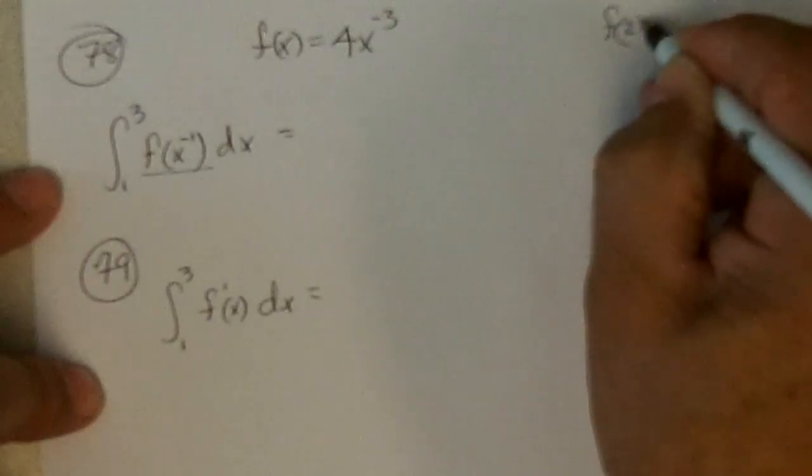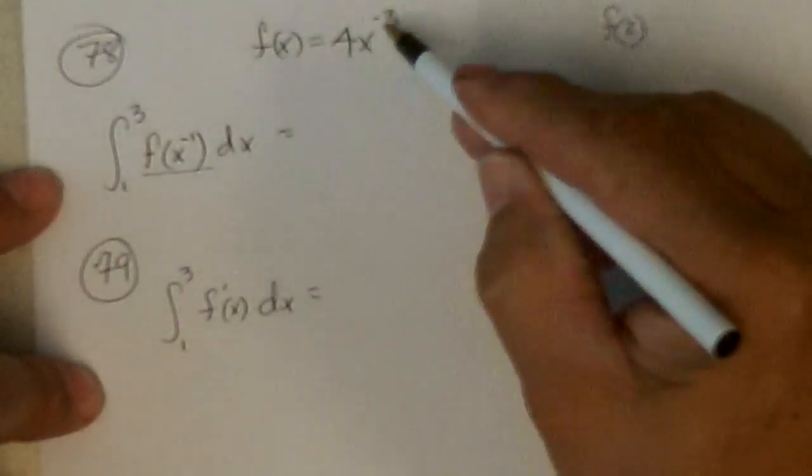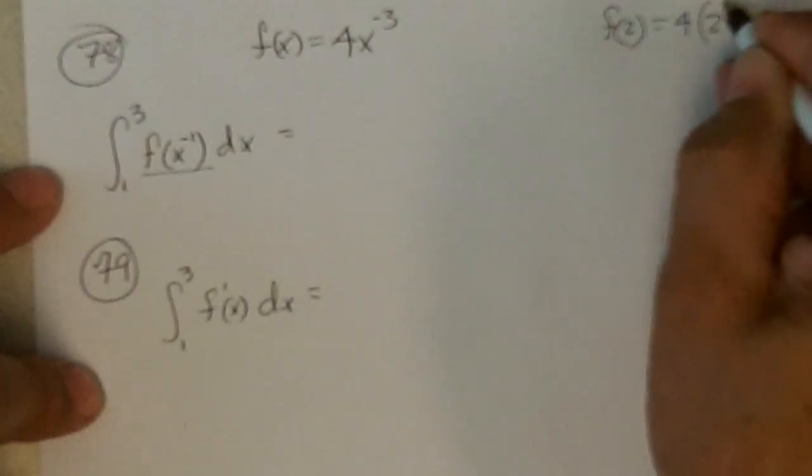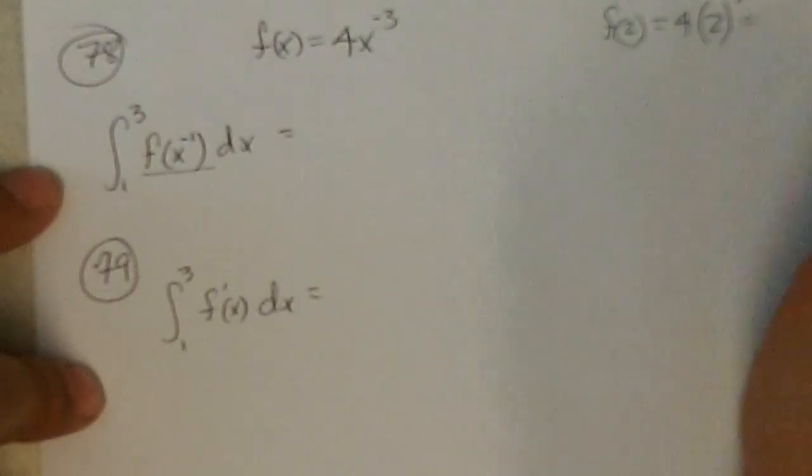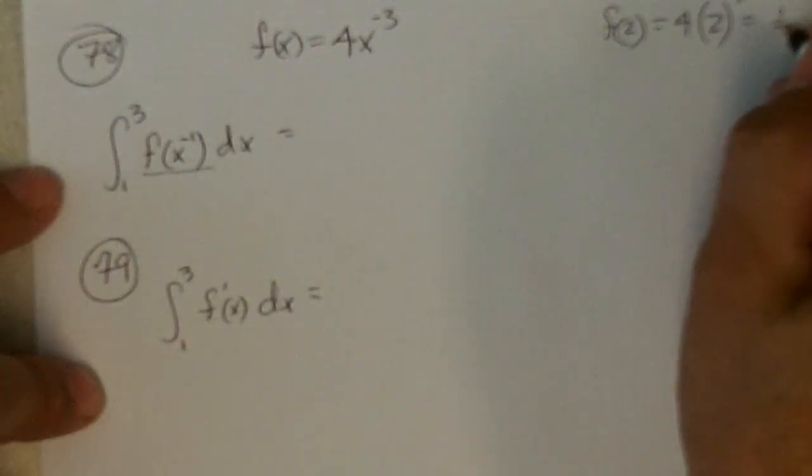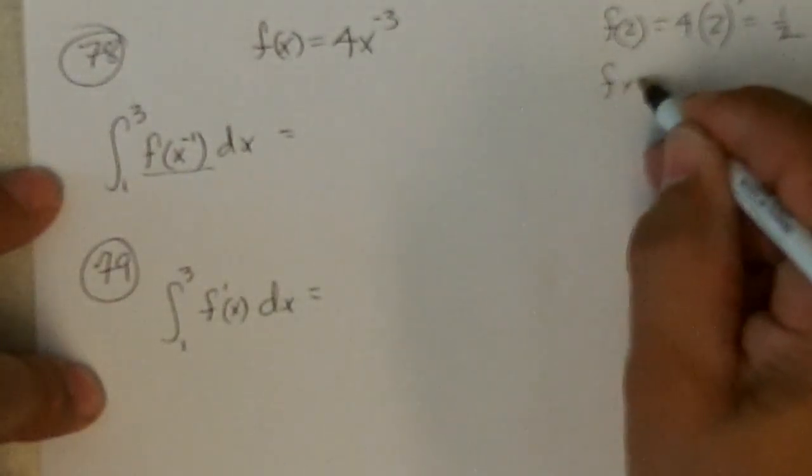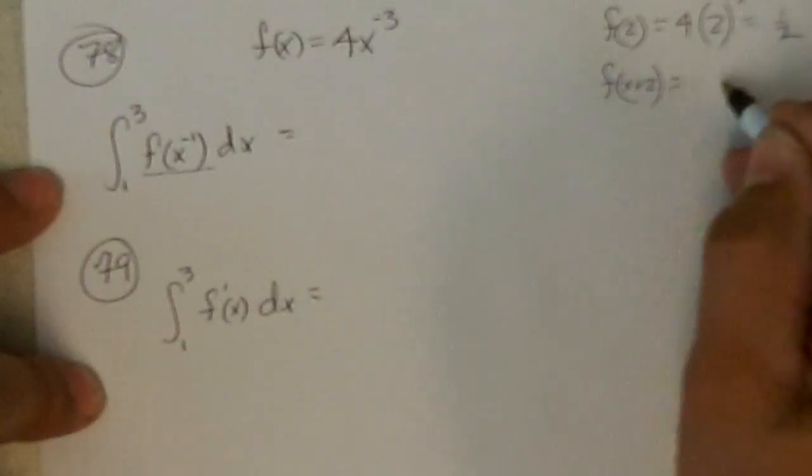Okay, two more problems. 78. Now, some people are confused by this. So to help people out, I said, what was f of 2? So if you had to find f of 2, you'd just plug 2 in for the x. So it'd be 4 times 2 to the negative 3. And you can work that out. It turns out to be 1 half.